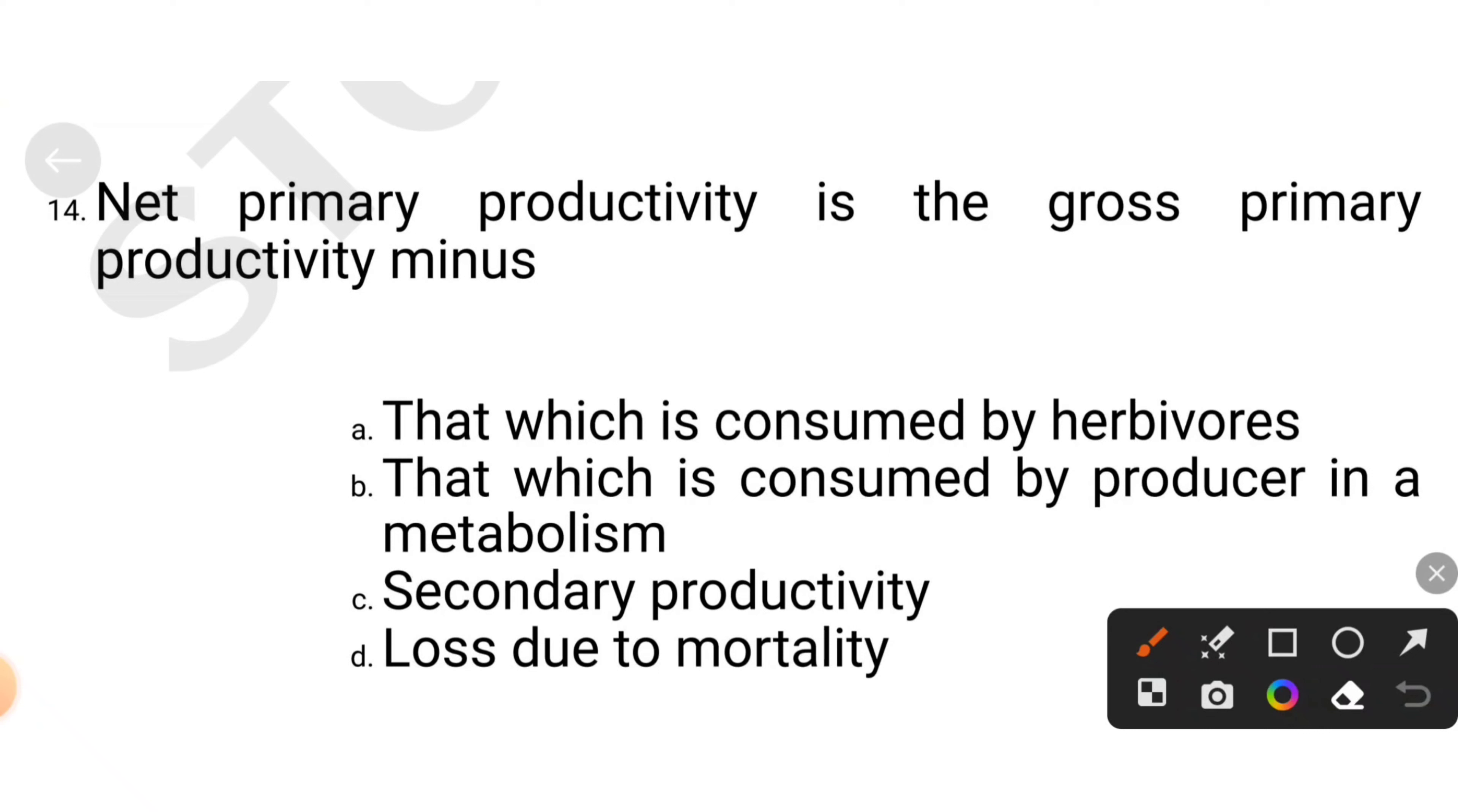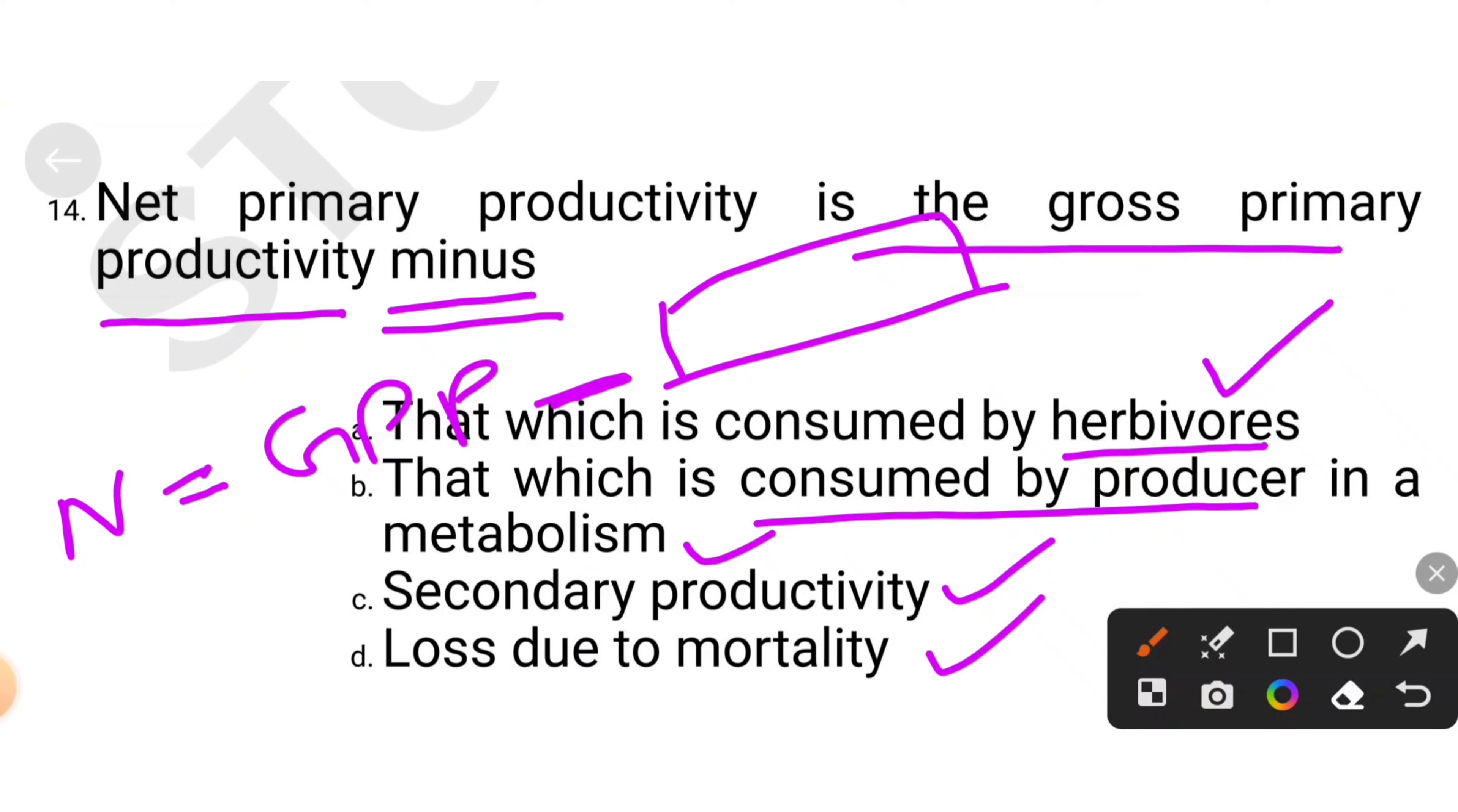Net primary productivity is the gross primary productivity minus. We have learned gross primary productivity, net primary productivity. Net primary productivity is the gross primary productivity minus the energy consumed by producers in metabolism, for themselves like respiration or reproduction. So what is the option B.